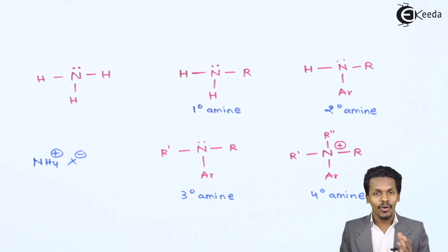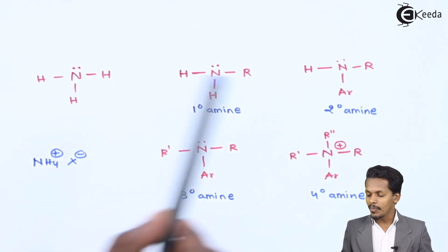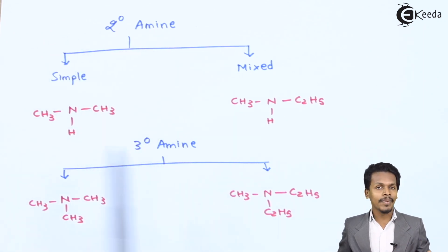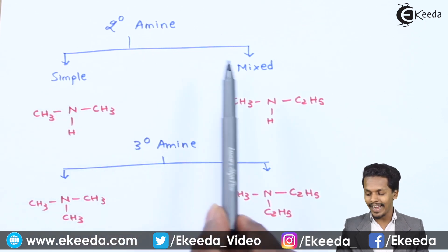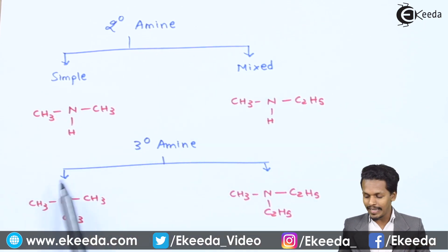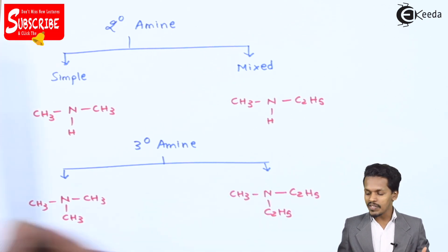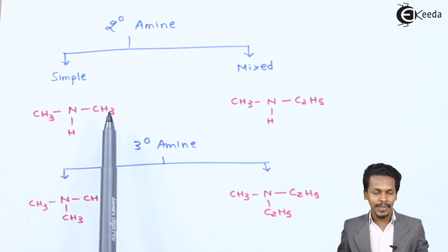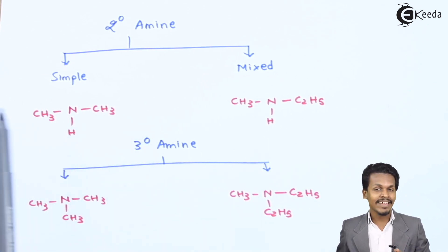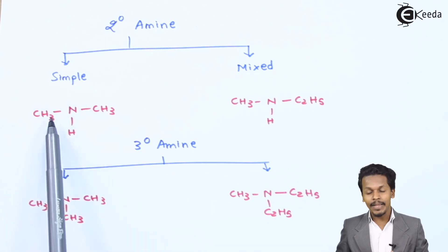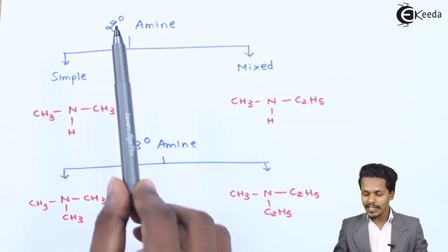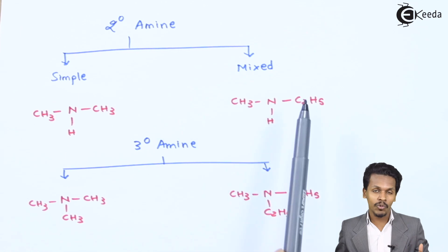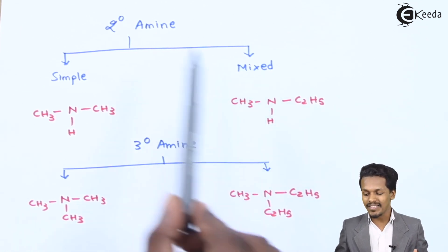Secondary and tertiary amines are further classified into two types: simple and mixed. A simple secondary amine has two identical alkyl groups attached to the nitrogen. For example, methyl and methyl — both alkyl groups are the same. A mixed secondary amine has two different alkyl groups attached to the nitrogen, making it a mixed secondary amine.